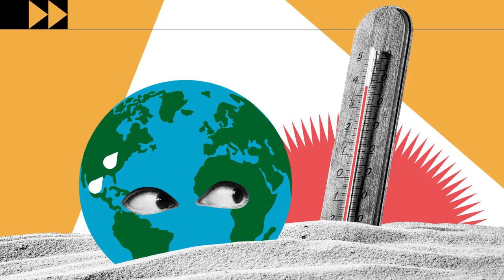with the abrupt end of the last ice age about 11,700 years ago marking the beginning of the modern climate era and of human civilization. Most of these climate changes are attributed to very small variations in Earth's orbit that change the amount of solar energy our planet receives.